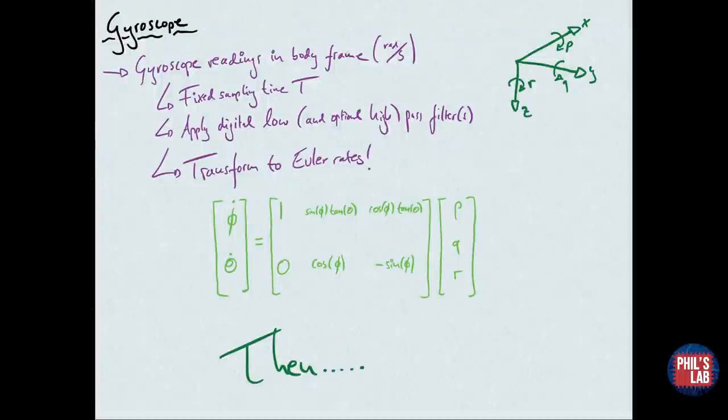Let's look at the gyroscope. The gyroscope readings are in the body frame in radians per second. We're measuring angular rates of change along each body frame axis: P, Q, and R. We're doing this at a fixed sampling time T, the same sampling time as the accelerometer. Then we apply a digital low-pass filter and optionally a very low cutoff high-pass filter to aid with the bias drift.